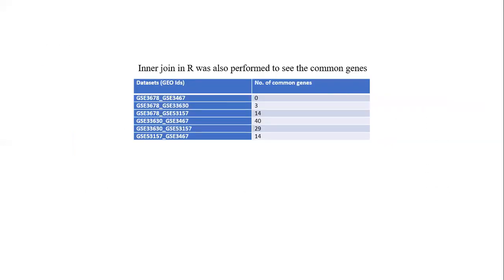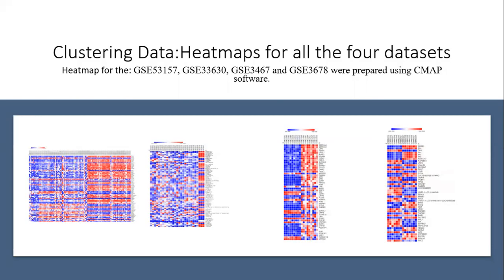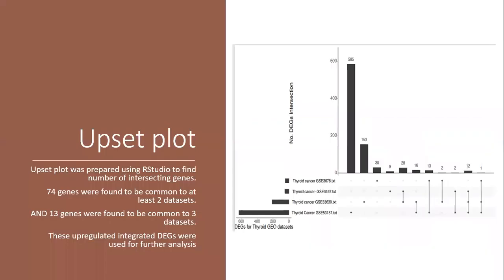An inner join function was also performed to see the number of common genes. The highest number of common genes between any two datasets was 40, with no common genes found between GSE3678 and GSE3467. Heat maps for all four datasets were prepared using CMAP software, showing the top upregulated genes differentially expressed in normal thyroid and thyroid cancer samples. An upset plot was prepared using RStudio to find the number of intersecting genes. 74 genes were found to be common to at least two datasets, and 13 genes were found to be common to three datasets. These upregulated integrated DEGs were used for further analysis.